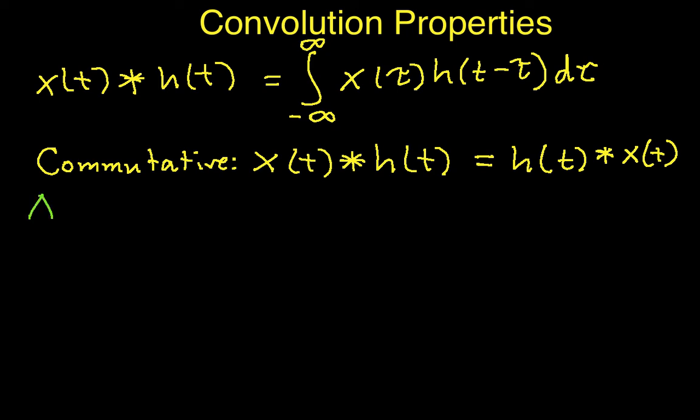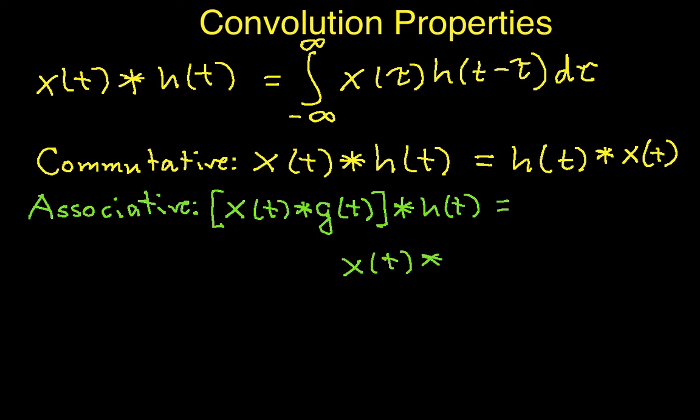Another property is that convolution is associative. So, if I have x of t convolved with g of t and I perform that convolution first and then convolve that with another h of t, this is equal to x of t convolved with g of t convolved with h of t, where I do the second convolution first.